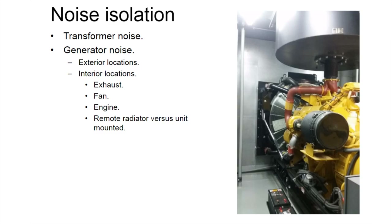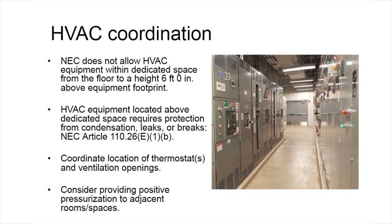Noise is another environmental impact. Transformers generate noise that is fairly predictable based on their size and loading. When locating a transformer within a building, be aware of adjacent spaces — a conference room next to an electrical room with large transformers might not be the best idea. From an HVAC standpoint, ductwork serving a space provides a conduit for noise into adjacent spaces, and inline silencers may be required. Generators produce a tremendous amount of noise; sources include the exhaust system, the radiator fan, and the engine surface. A remote radiator versus an on-unit mounted radiator will have a wide impact on noise as well as room configuration.